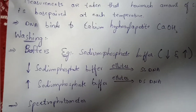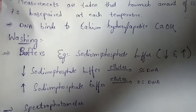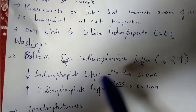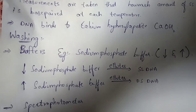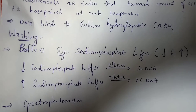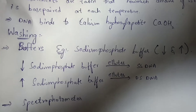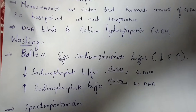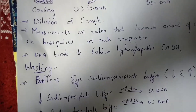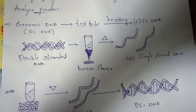The instrument used to measure both solutions — single-stranded DNA and double-stranded DNA obtained from low and high concentration sodium phosphate buffer washing — is the spectrophotometer. This is the only instrument used to measure these two solutions in Cot curve analysis.